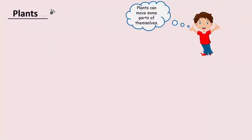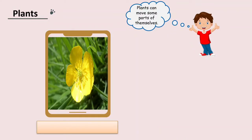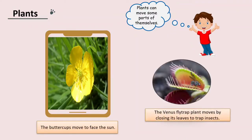How about plants? Can plants move by themselves? No, actually, but here plants can move some parts of themselves. These are the examples. The first one, the buttercups move to face the sun, or this one, the Venus flytrap plant moves by closing its leaves to trap the insects.